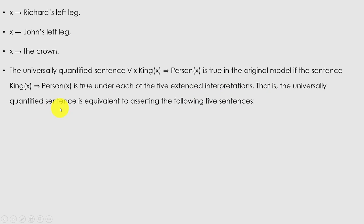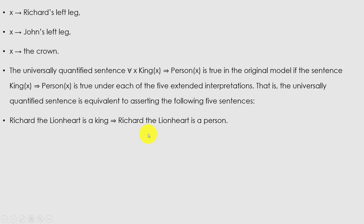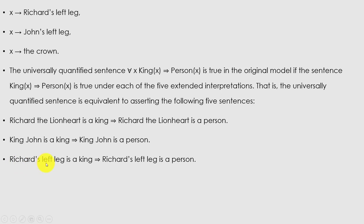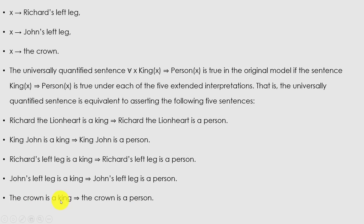The universally quantified sentence is equivalent to asserting the following five sentences: Richard the Lionheart is a king ⇒ Richard the Lionheart is a person; King John is a king ⇒ King John is a person; Richard's left leg is a king ⇒ Richard's left leg is a person; John's left leg is a king ⇒ John's left leg is a person; The crown is a king ⇒ the crown is a person.